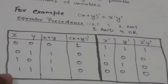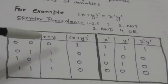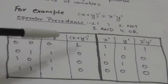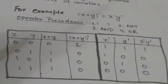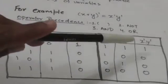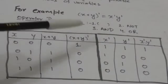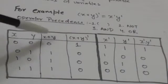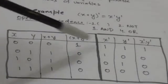Now we have to check for other possible combinations of values for X and Y. When X equals 0 and Y equals 1, then X OR Y will be 1 and its complement will be 0. X naught will be 1, Y naught will be 0, and X naught AND Y naught will be 0. So here again both sides give the same result: 0 and 0.